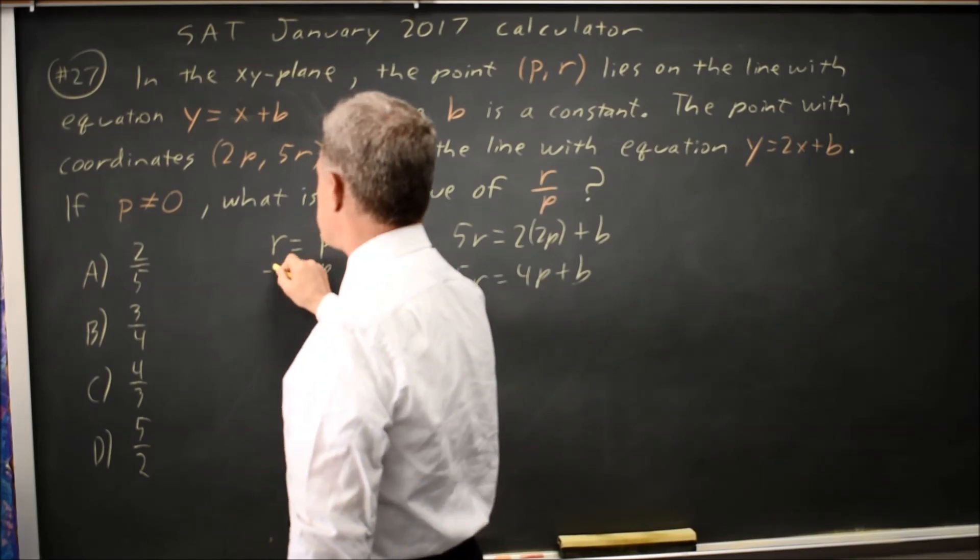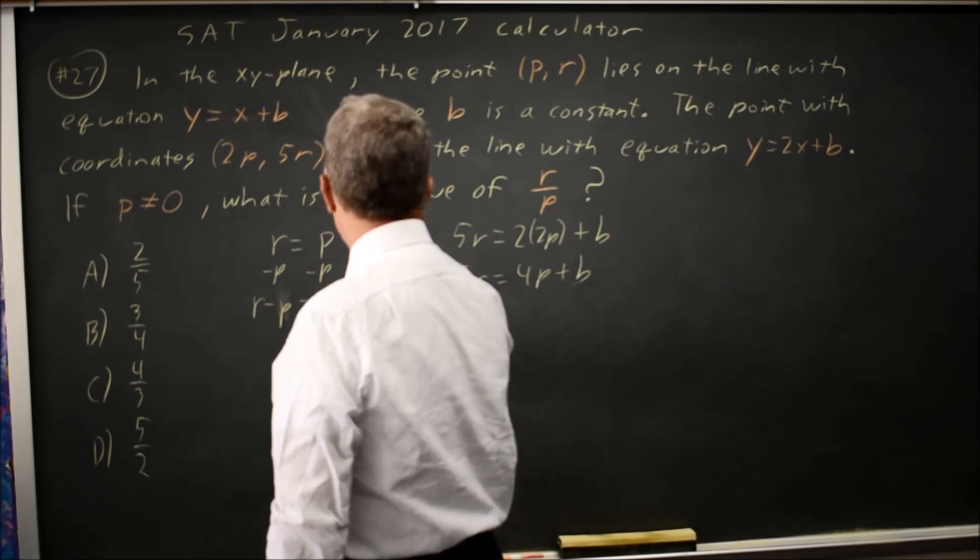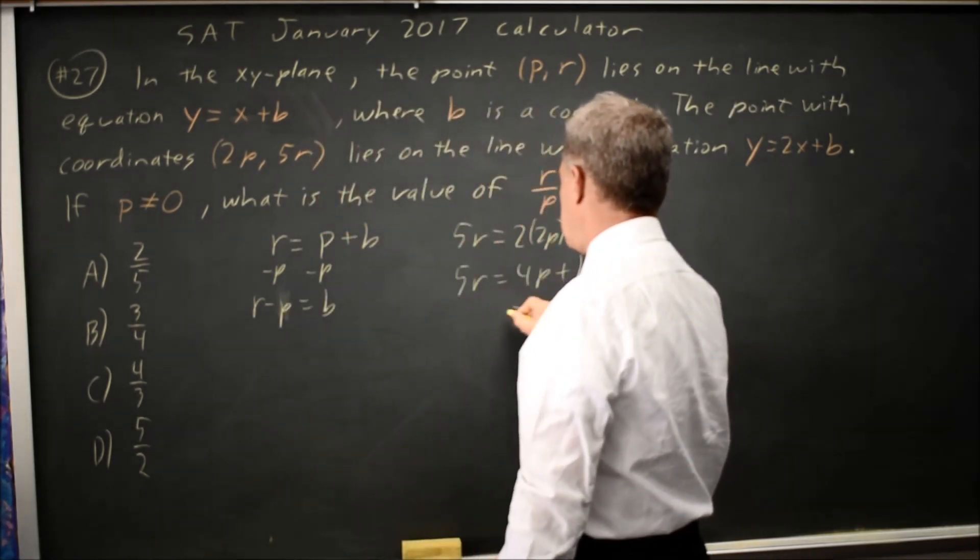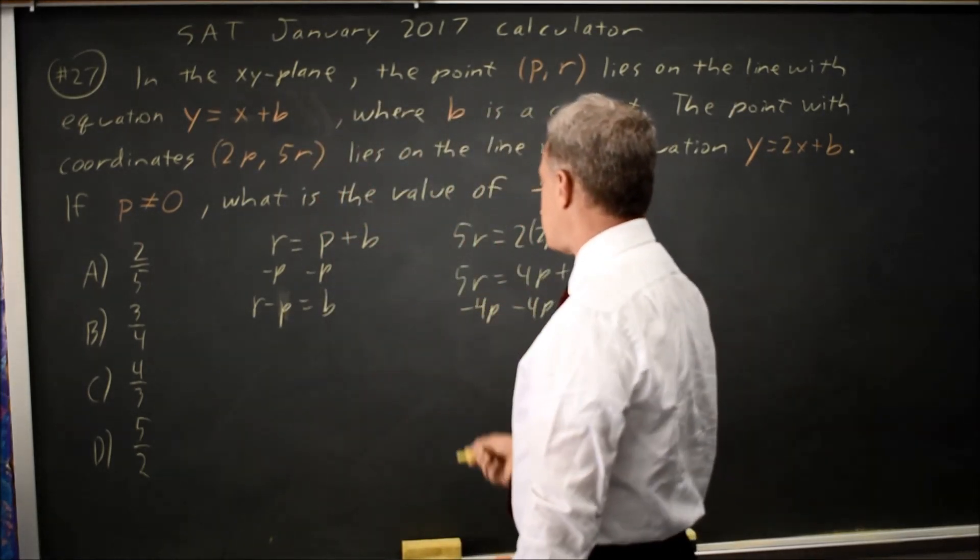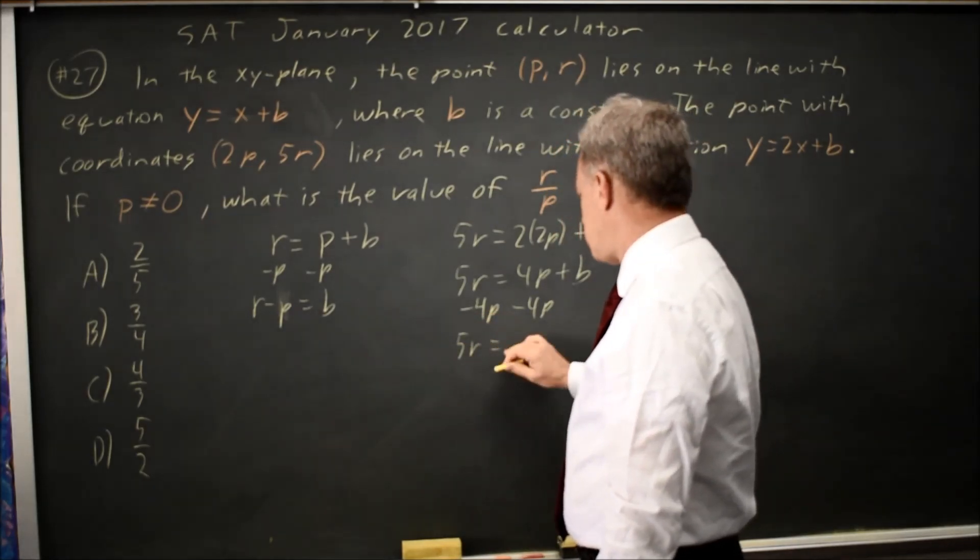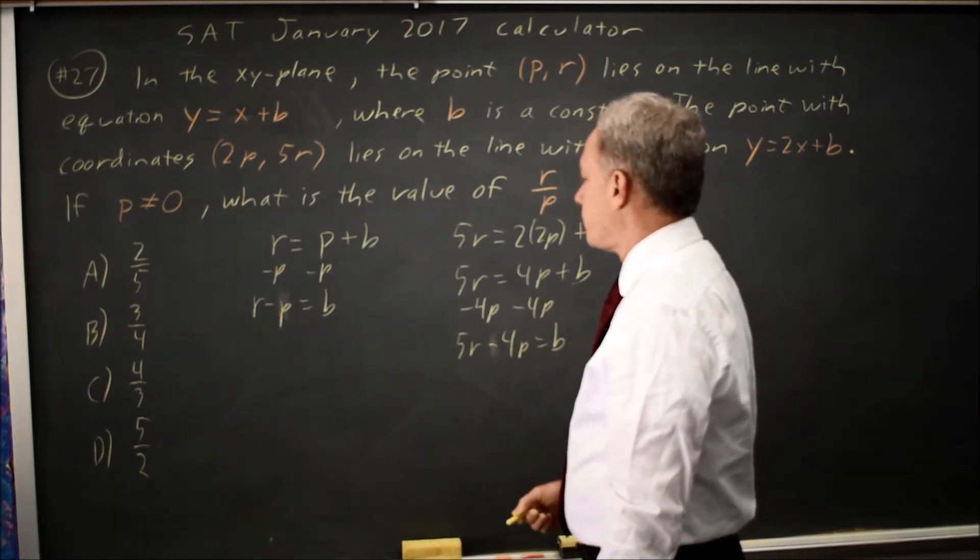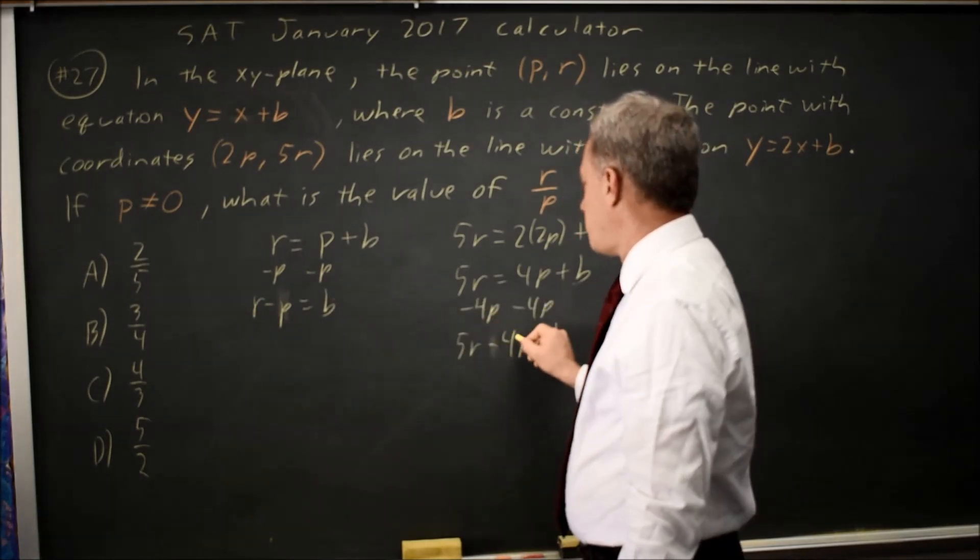Subtract p from both sides, r minus p equals b. Subtract 4p from both sides, always do the same thing to both sides of an equation, 5r minus 4p equals b.